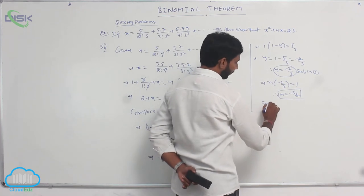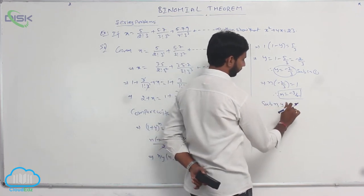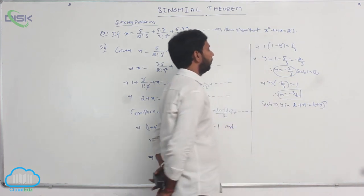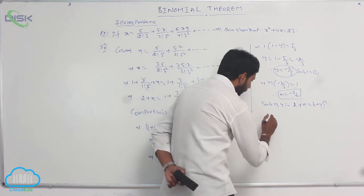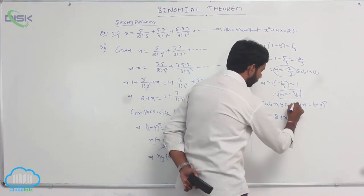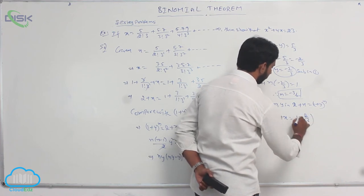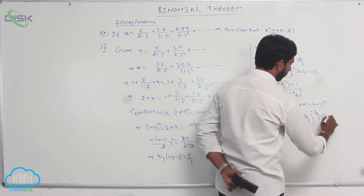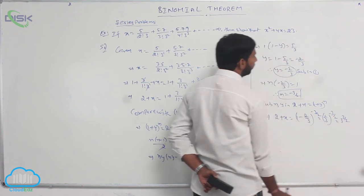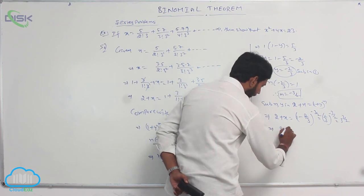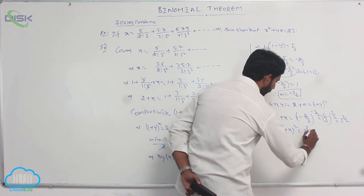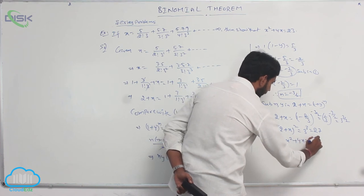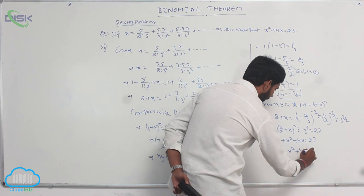Substituting n and y into 1 plus y whole power n equals 2 plus x: 2 plus x equals 1 minus 2 by 3, whole power minus 3 by 2, which equals 1 by 3 whole power minus 3 by 2, which equals 3 to the power 3 by 2. Squaring both sides: 2 plus x whole square equals 3 cubed equals 27. Expanding: 4 plus x squared plus 4x equals 27, therefore x squared plus 4x equals 23.